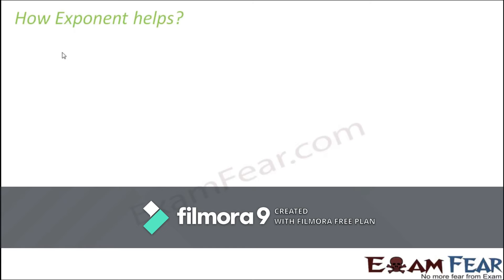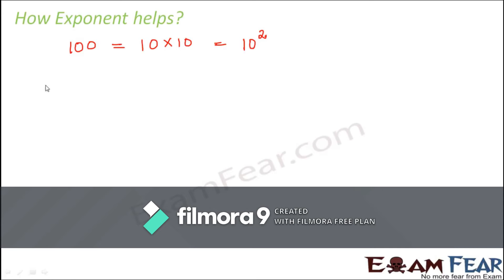Let's see how exponents help. Consider the number 100. It can be written as 10 multiplied by 10, or as 10 to the power 2. This means 10 is multiplied two times. You might say that writing 10 × 10 and writing 10² are equally convenient, so why use a power? In this case it might not bring much difference, but as you move on to bigger numbers it does.